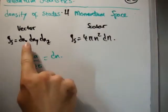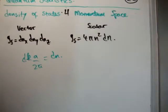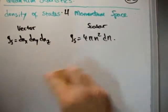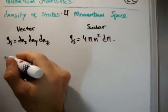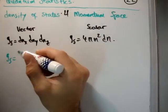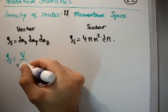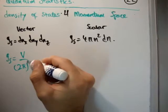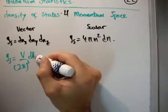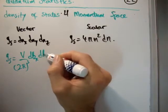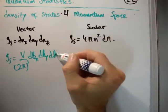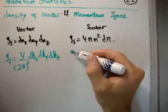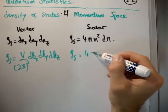So I'm going to plug that expression into both of these to get the density of states in k space. So the density of states in vector k space is going to be V over (2π)³ dk_x dk_y dk_z.